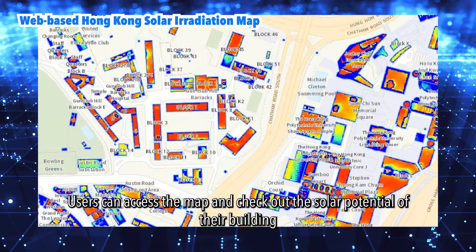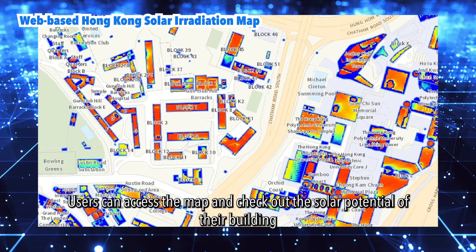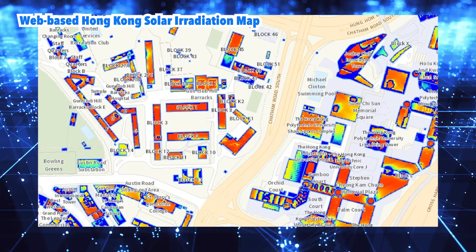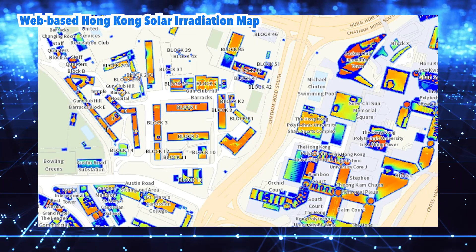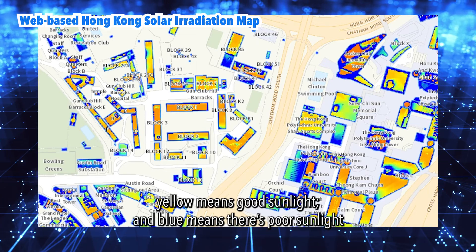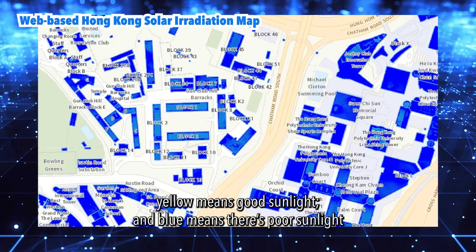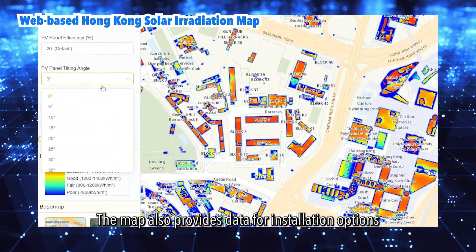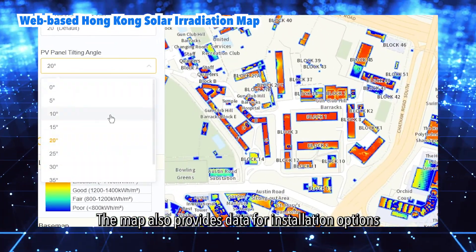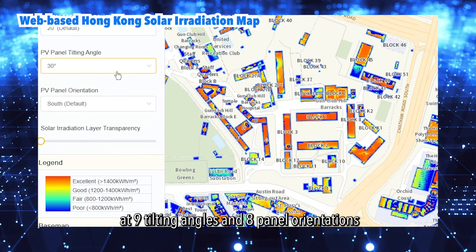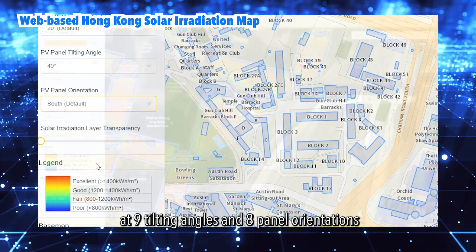Users can access the map and check out the solar potential of their building. Areas in red means there's excellent sunlight, yellow means good sunlight, and blue means there's poor sunlight. The map also provides data for installation options at 9 tilting angles and 8 panel orientations.